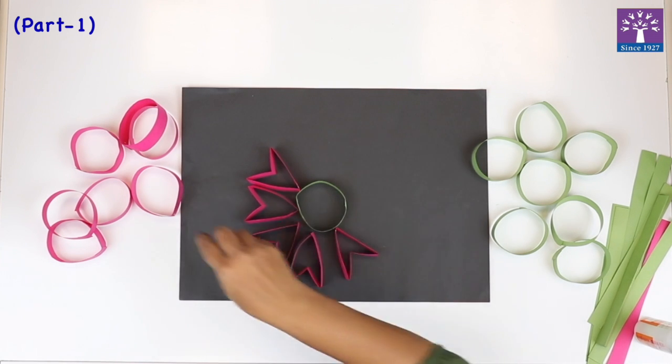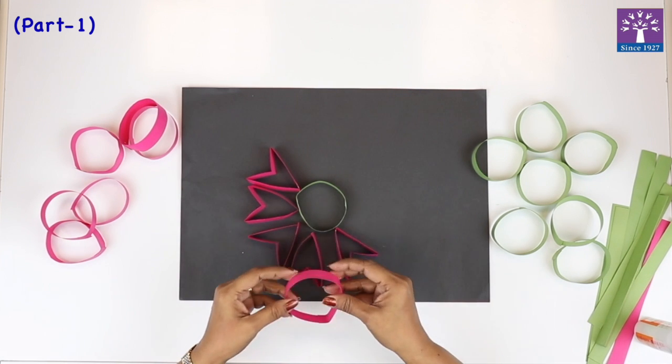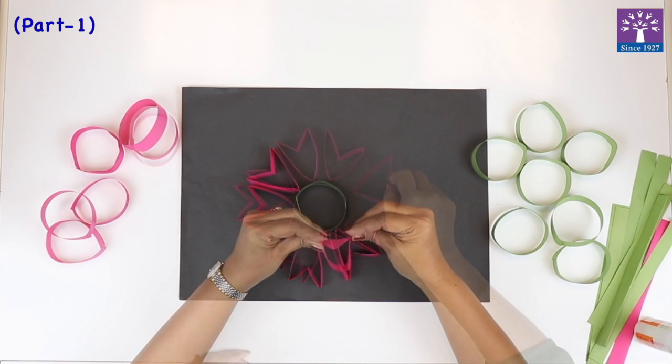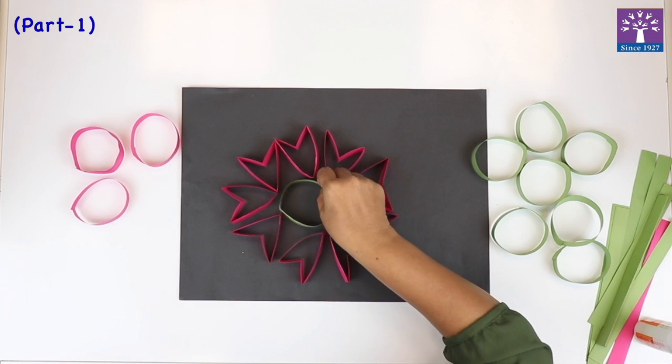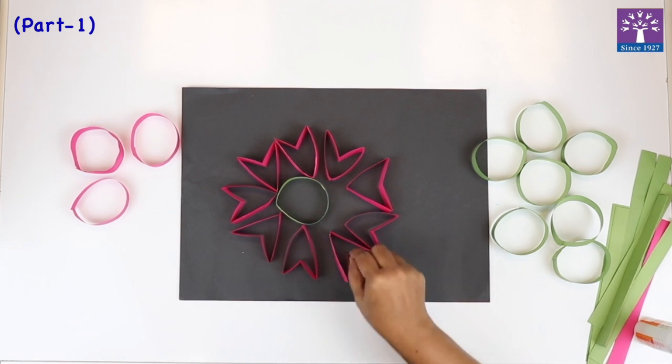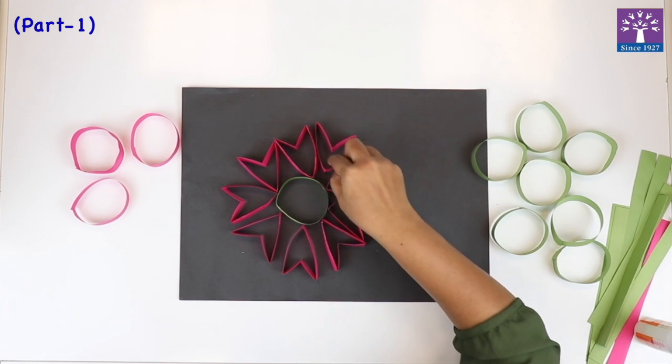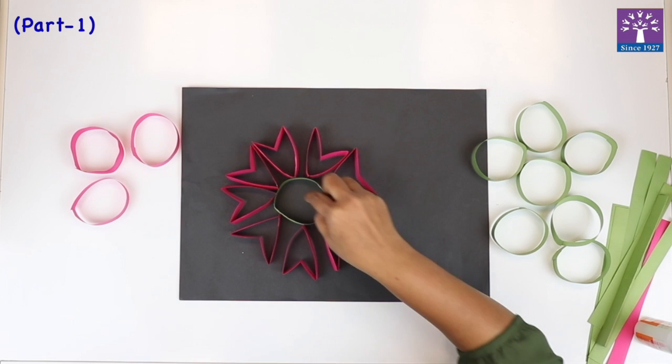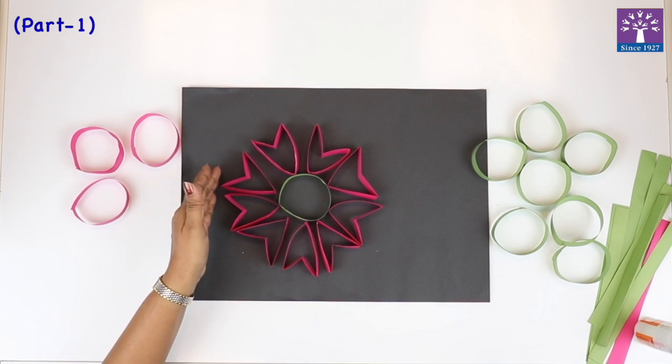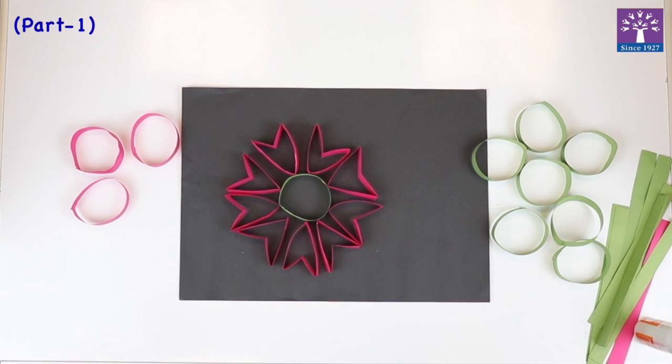We need a few more, so let's make more. Now we arrange this neatly and then you can start applying glue. Our one paper sculpture flower is ready.